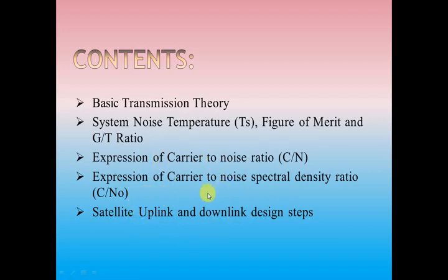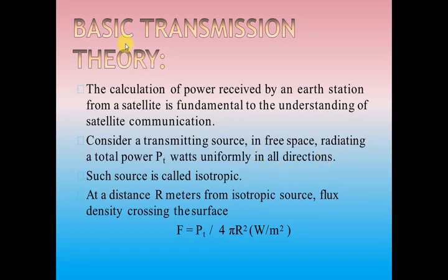Now let us start with the basic transmission theory. Under this basic transmission theory, the amount of power received by the earth station from the satellite is considered the fundamental of understanding satellite communication. The amount of power radiated by the transmitting antenna source is PT in watts, which radiates this power uniformly in all directions. That is why this antenna is considered an isotropic antenna and the power is considered as EIRP, that is effective isotropic radiated power.